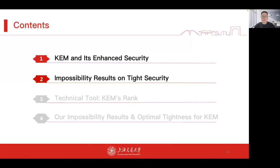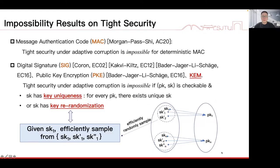It is desirable to have tightly secure schemes; however, many existing works proved impossibility results on tight security of many primitives. For example, Morgenstern and Shoup showed that for deterministic message authentication code and deterministic digital signature, it is impossible to achieve tight security under adaptive corruptions from bounded-round assumptions. For digital signature, public encryption, and KEM, starting from the similar work by Coron, there is a line of research including Kalkiv, Kultz, Badzer, Jager, Li, and Schäge, showing that tight security under adaptive corruption is impossible to achieve if the relation PK-SK is checkable and one of the following two conditions hold.